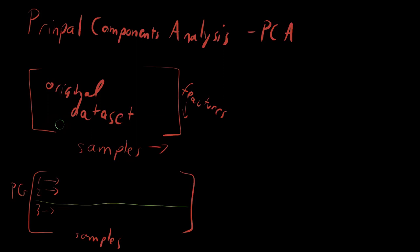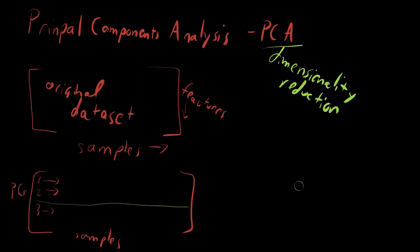PCA is considered one of the simplest dimensionality reduction techniques. It's a linear dimensionality reduction technique that is very easy to understand. Further, it is a direct consequence of building and understanding a covariance matrix. Let's explain what that means.